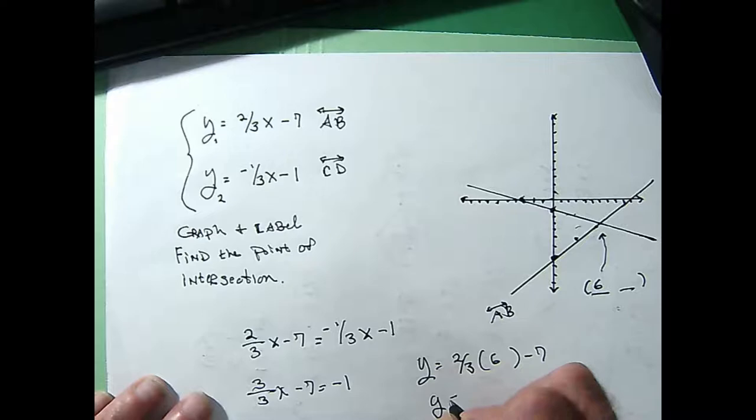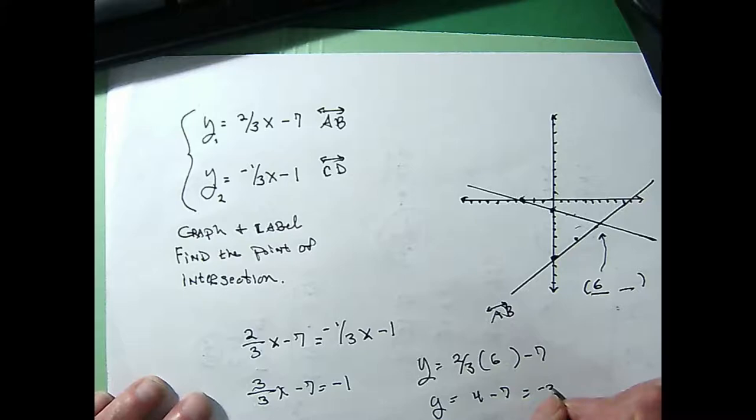I'll go with y = 2/3 of whatever x was minus 7. Yep, this formula gives me y. I'm going to let x be 6, so that would be 2/3 of 6. 2/3 of 6 is 4 minus 7. Yeah, that would be negative 3.